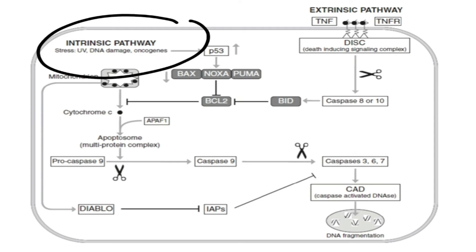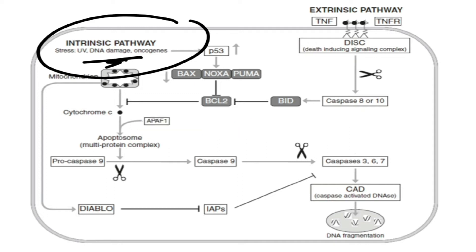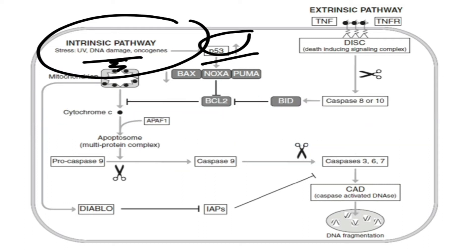Let's start with the intrinsic pathway. DNA damage is the main initiation factor. Once DNA damage happens, P53 is activated. P53 is one of the tumor suppressor proteins — a group of proteins that regulate cell division and inhibit uncontrolled cell growth by two ways: first, by stopping the cell cycle to give the repair system time to repair the DNA damage; and second, if the repair system is unable to repair the damage, by forcing cells to enter apoptosis.